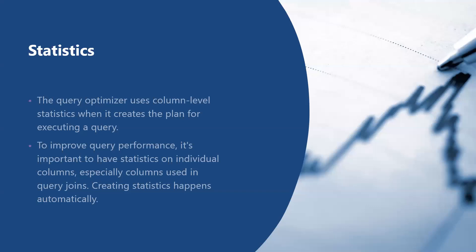Let's talk about statistics. The query optimizer uses column-level statistics when it creates the plan for executing a query. We can collect statistics manually or automate collection. To improve query performance, it is important to have statistics on individual columns, especially columns used in query joins. Creating statistics happens automatically, but updating statistics does not happen automatically. Update statistics after a significant number of rows are added or changed — for example, we can update statistics after each load.